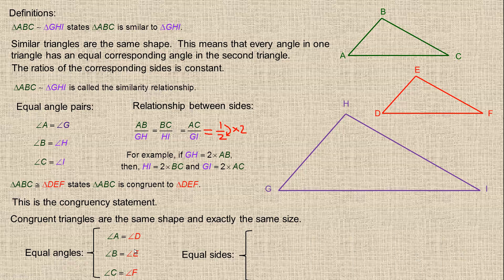In congruent triangles, we could talk about ratios of sides, but since they're exactly the same size, the sides aren't just proportional — they're actually equal. So AB and DE are equal, BC and EF are equal, and AC and DF are equal. The angles part is the same between congruent and similar. What's different is the lengths of the sides: in congruent figures the corresponding sides are exactly equal, while in similar figures they're in the same proportion.